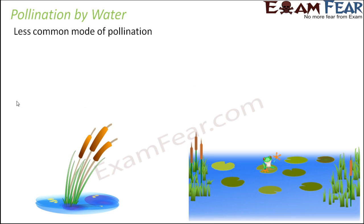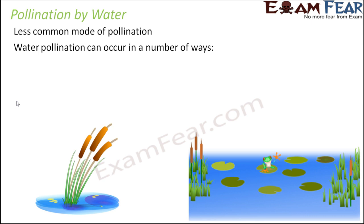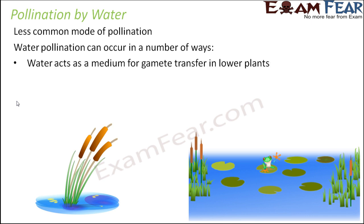The next abiotic agent is water. Water pollination is a less common mode compared to wind pollination and can occur in a variety of ways depending on the plant. In lower plants like algae, mosses, and ferns, water acts as a medium for gamete transfer — the male gamete is released into the water, the female gamete is also released into the water, and fusion takes place in the water itself.